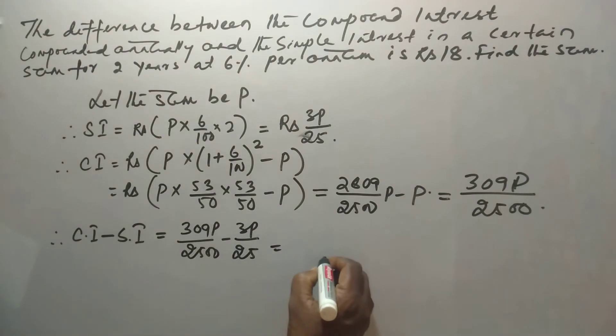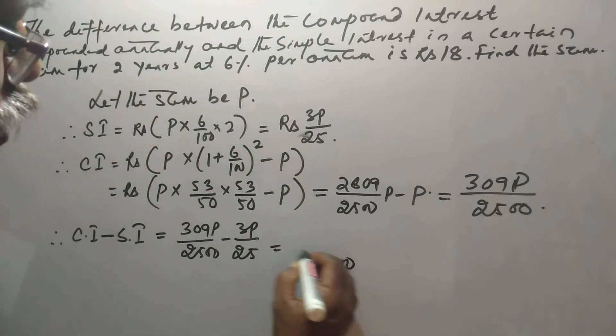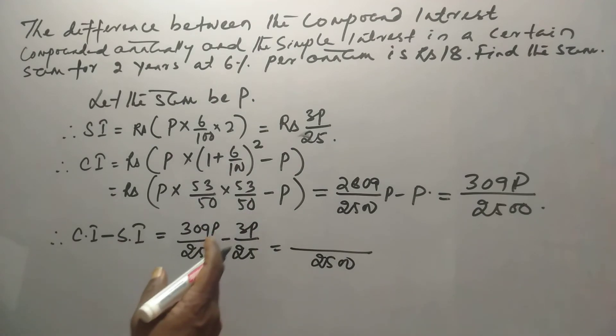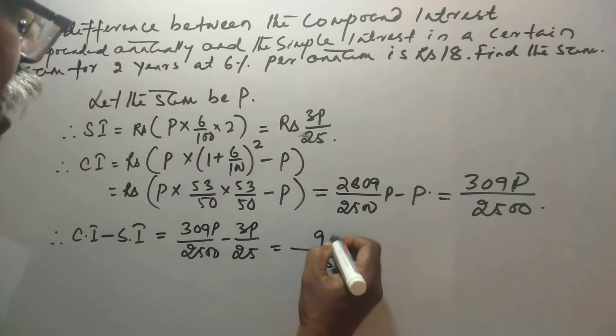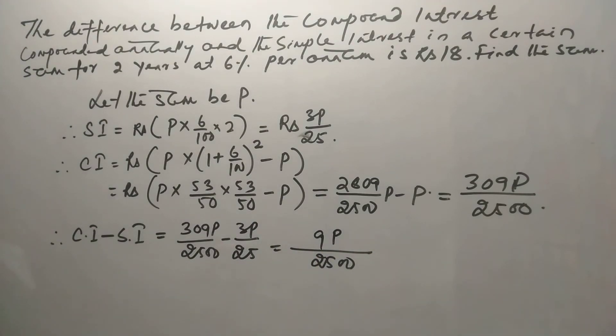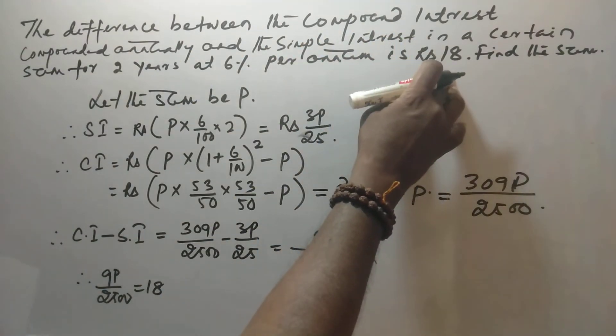Now, taking 2500 as the LCM, we get 309P minus, that means 9P by 2500. So it is given 9P by 2500 is equal to Rs. 18 as in question.